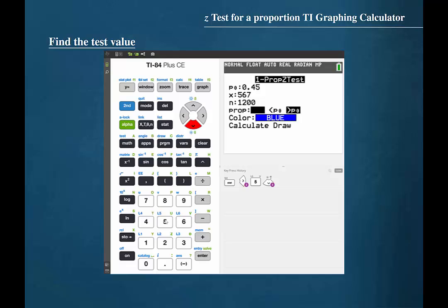The next line requires us to indicate whether the test is a two-tailed test, a left-tailed test, or a right-tailed test. This is a right-tailed test, so we will highlight the greater than symbol and press enter. Now cursor down to calculate and press enter. The calculator then gives us the z-test value of 1.57.